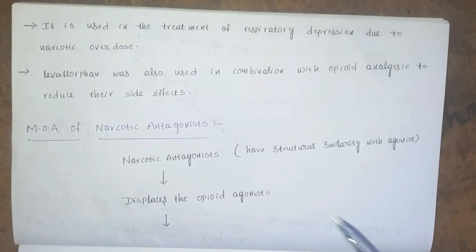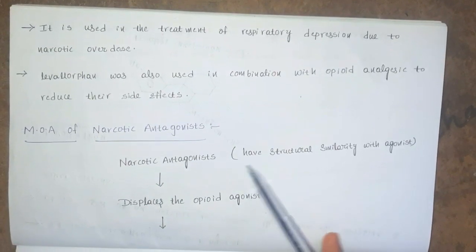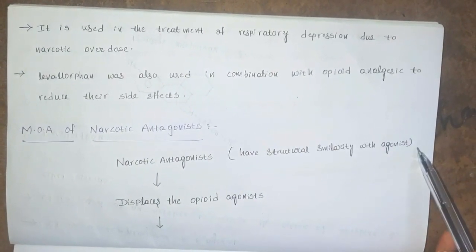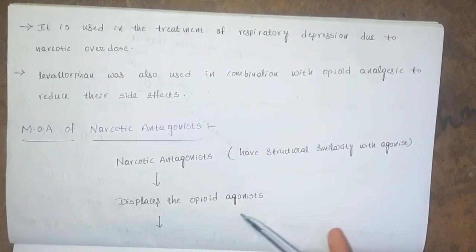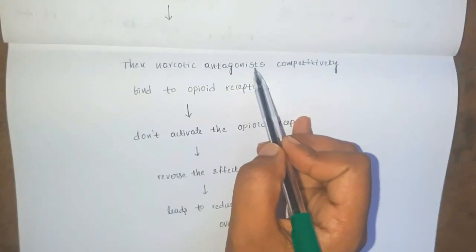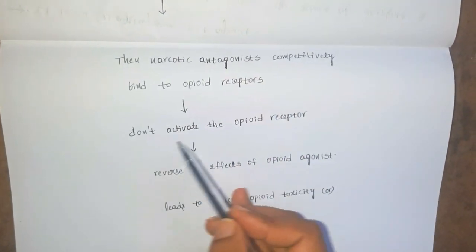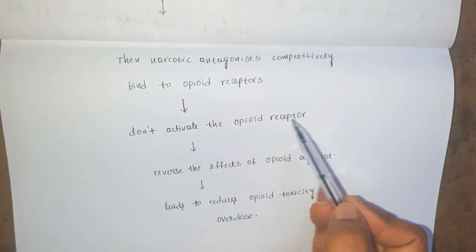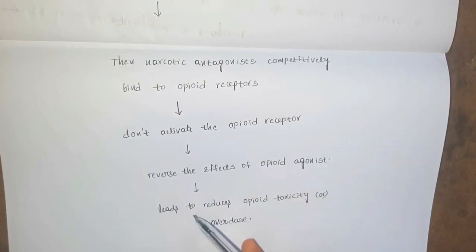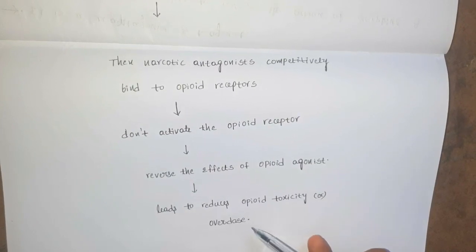Next, the mechanism of action of narcotic antagonists. Narcotic antagonists have structural similarity with narcotic agonists, so they displace the opioid agonists and bind to the opioid receptors. They do not activate the opioid receptors and reverse the effects of opioid agonists, leading to reduced opioid toxicity or overdose.